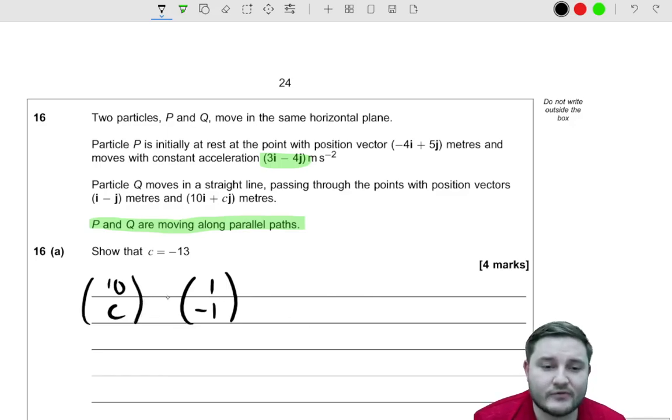Now, if I want to find the difference between these two, I'm going to subtract them. So I get (9, c+1) because subtracting a negative is the same as addition.